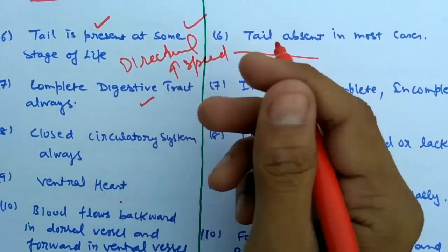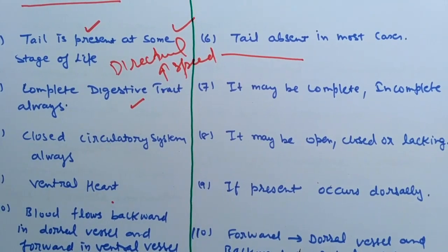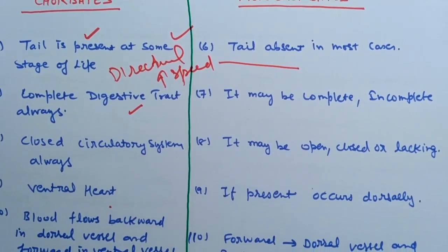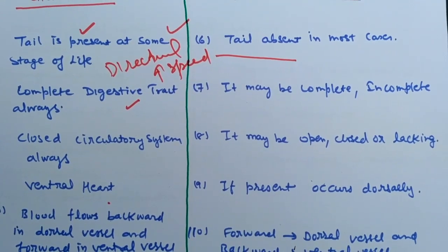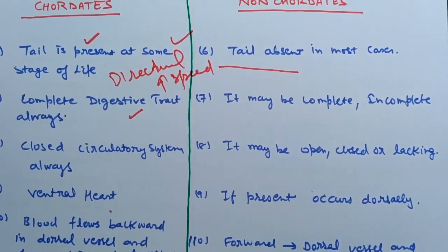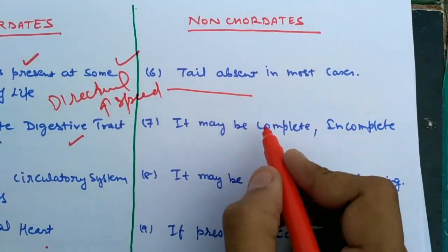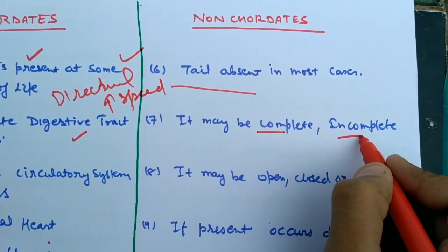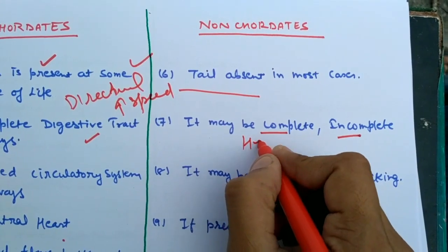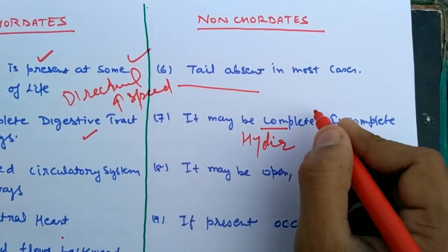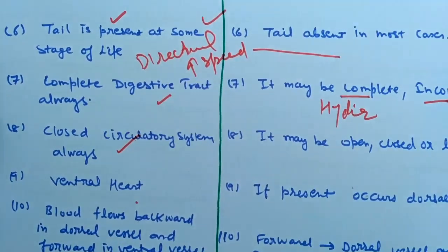The next difference is the complete gastrointestinal tract. In chordates, there is always a complete tract from mouth to anus — ingestion and digestion proceed from the mouth through the esophagus, stomach, small intestine, and large intestine, with fecal matter excreted through the anus. In non-chordates, it may be complete or incomplete — for example, incomplete in Hydra and complete in cockroach.